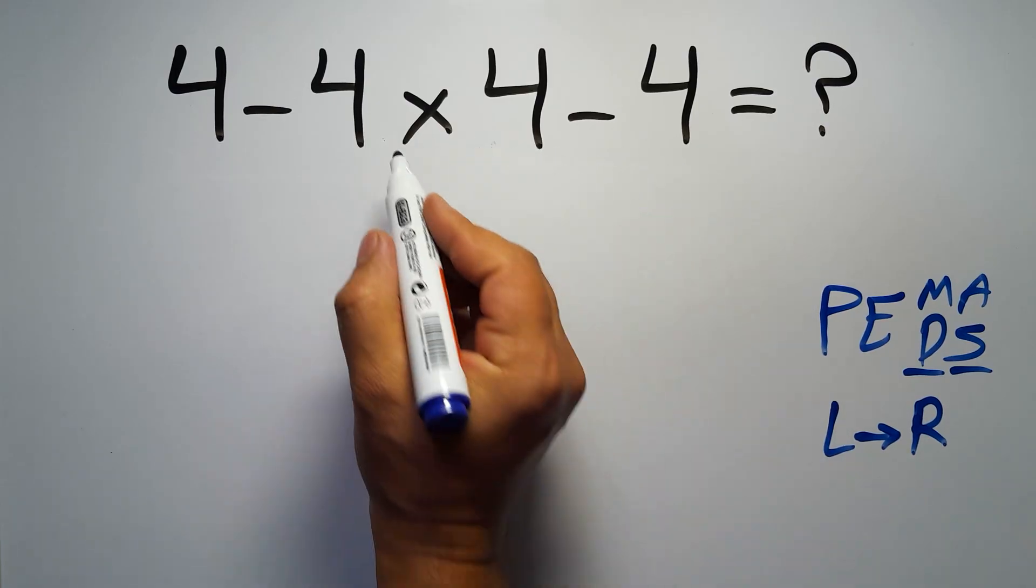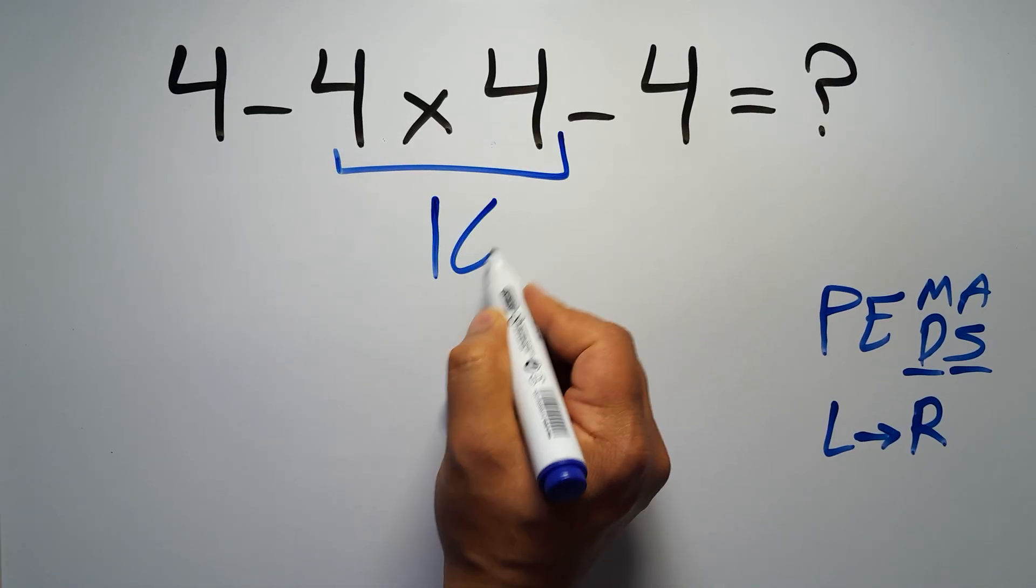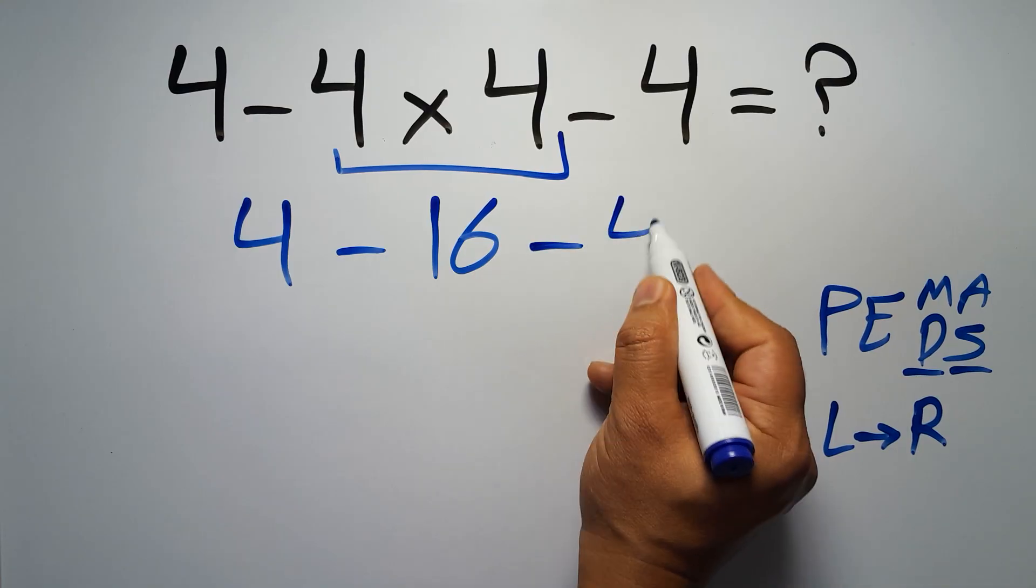So first we have to do this multiplication. 4 times 4 gives us 16, so we have 4 minus 16, and minus 4.